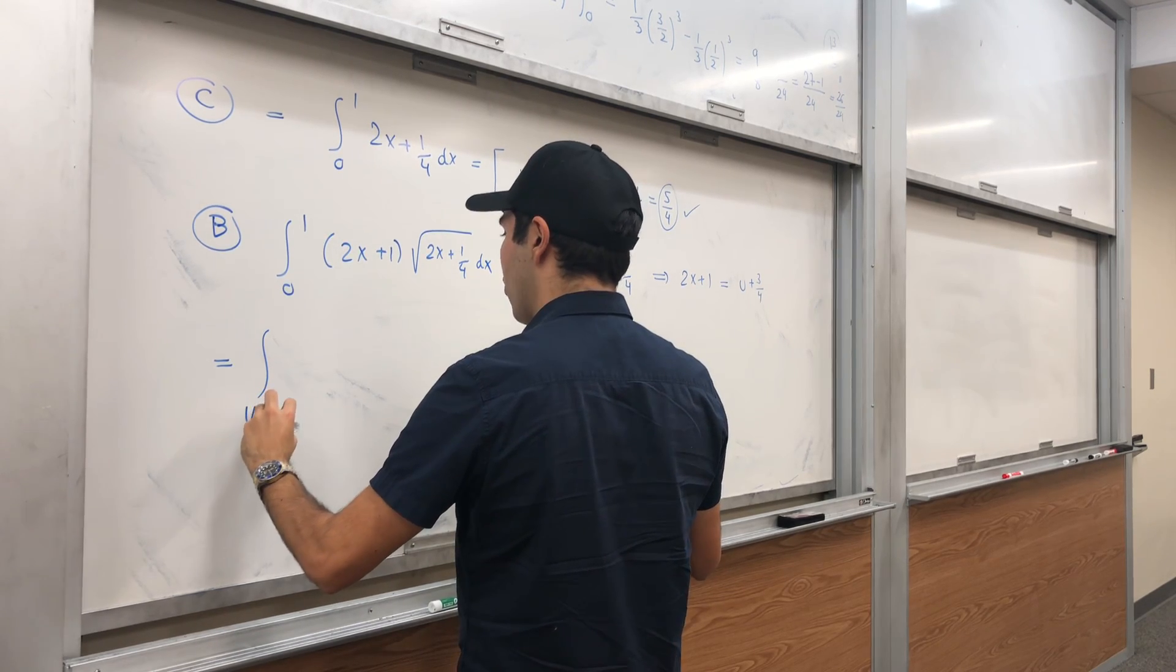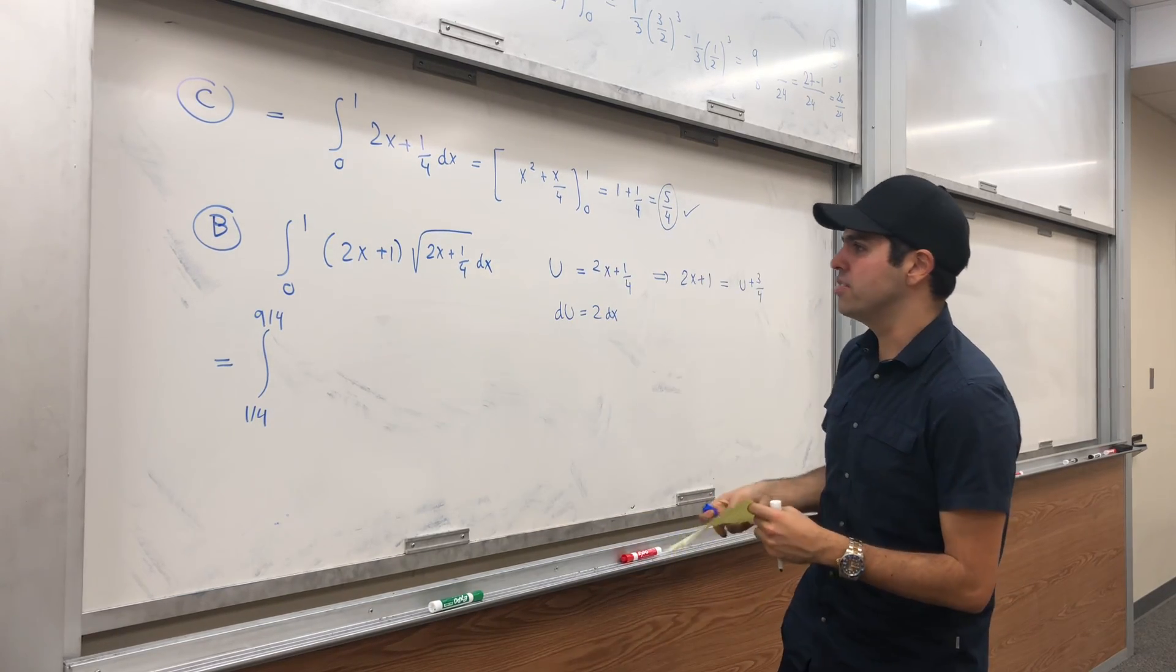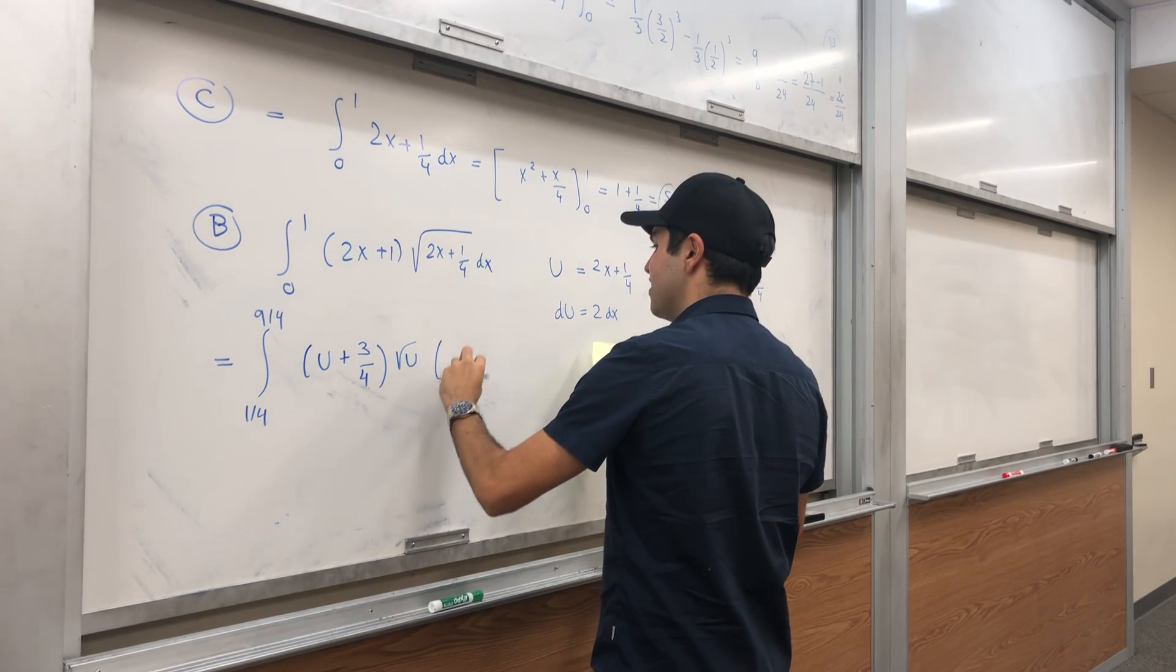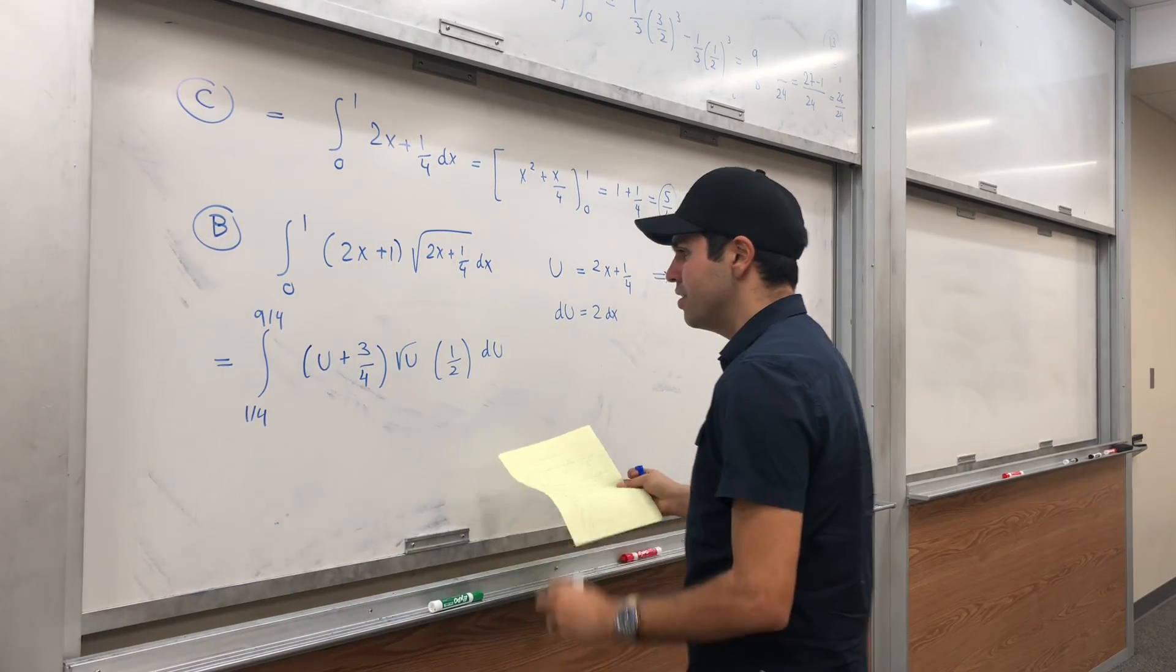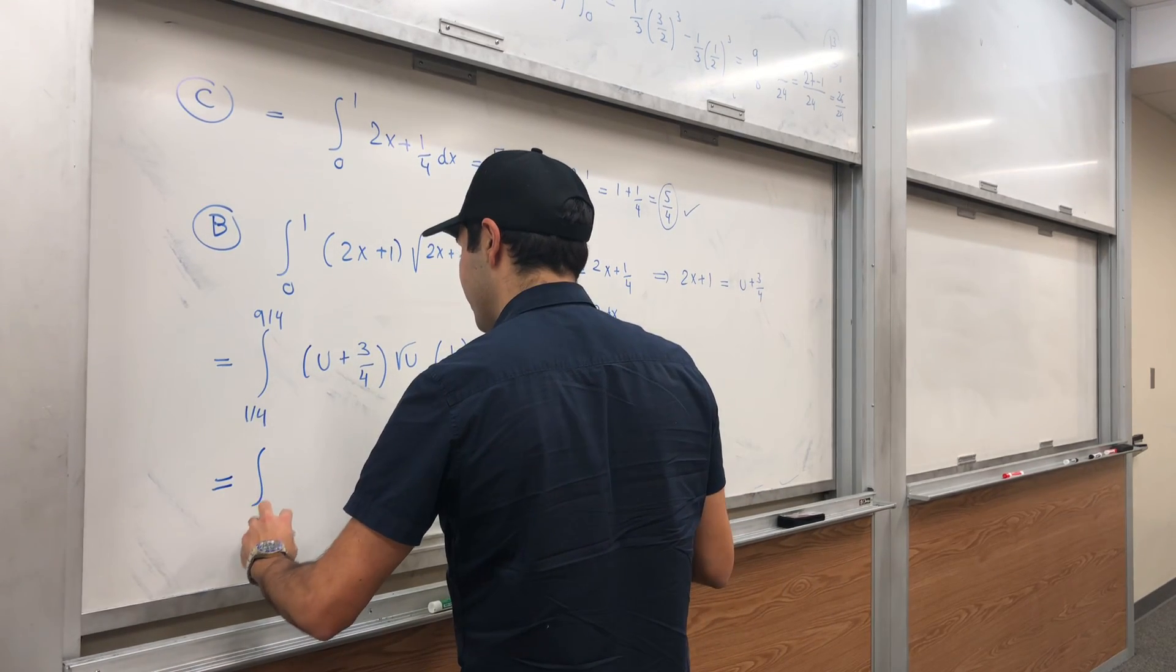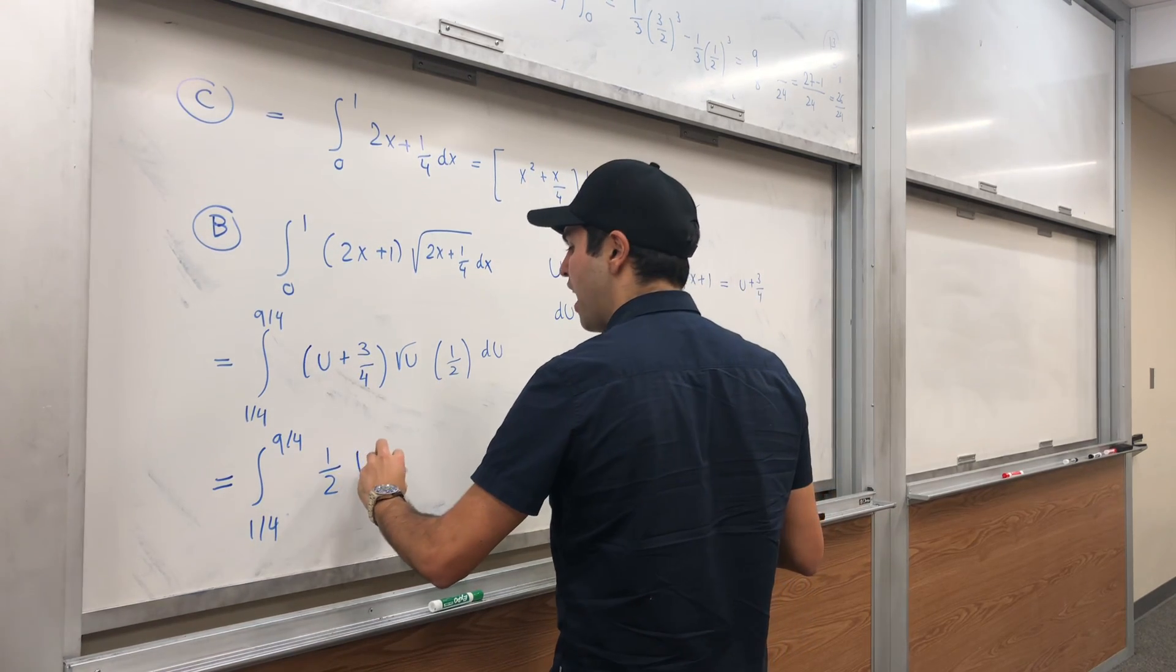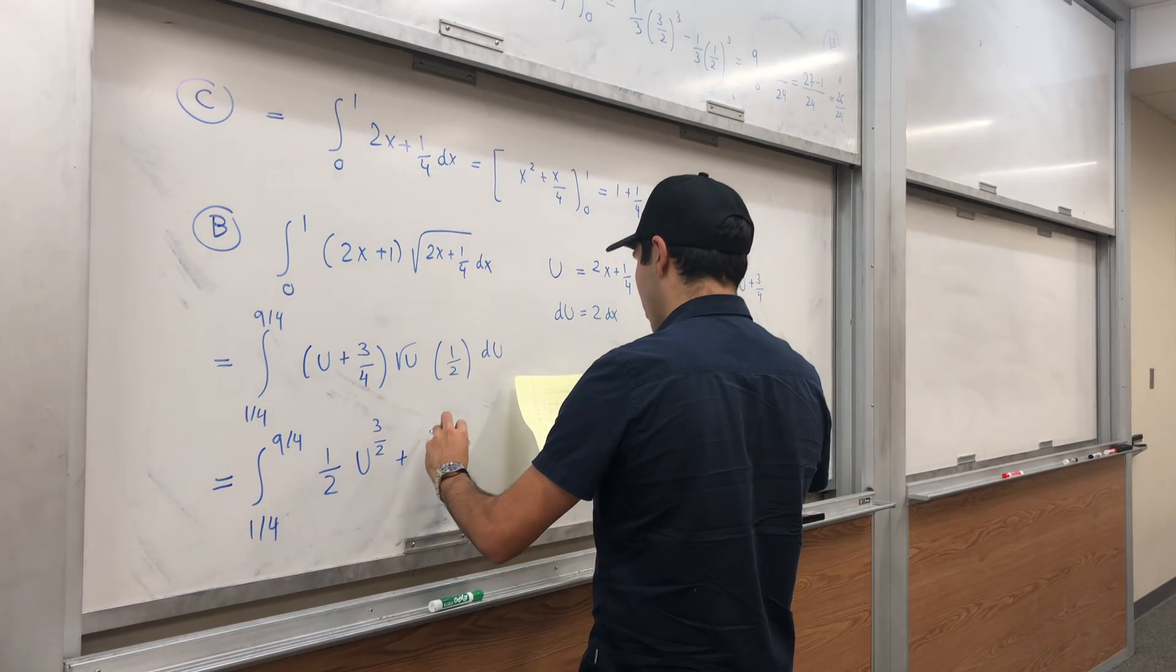So this becomes the integral with new endpoints 1/4 and 9/4—so 2 times 1 plus 1/4, 2 times 0 plus 1/4—of (u + 3/4)√u, and then this 1/2 from dx = du/2. And then the nice thing is you can just expand it out and those just become power functions. So integral from 1/4 to 9/4 of 1/2 u times u^(1/2), so u^(3/2), plus 1/2 times 3/4, so 3/8 u^(1/2) du.